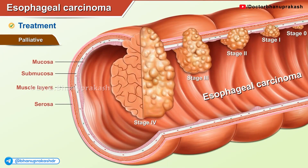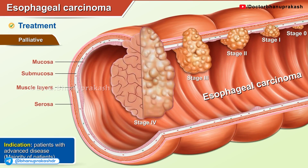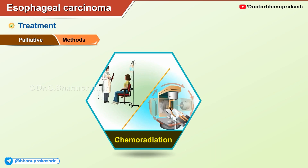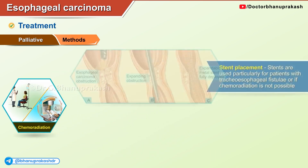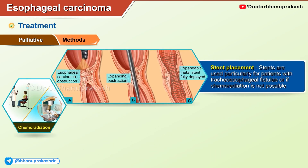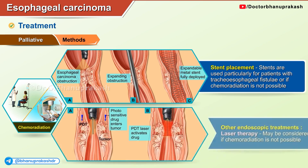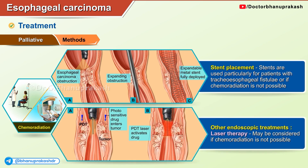Palliative treatment: indication is patients with advanced disease, which is the majority of patients. Methods include chemoradiation, stent placement (used particularly for patients with tracheoesophageal fistula or if chemoradiation is not possible), and other endoscopic treatments such as laser therapy, which may be considered if chemoradiation is not possible.